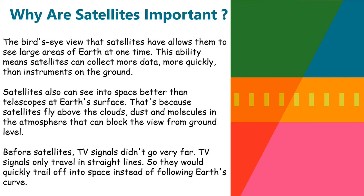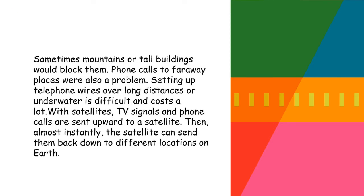Why are satellites important? The bird's eye view that satellites have allows them to see large areas of Earth at once. This means satellites can collect more data more quickly than instruments on the ground. Satellites can also see into space better than telescopes at Earth's surface, because satellites fly above the clouds, dust, and molecules in the atmosphere that can block the view from ground level. Before satellites, TV signals didn't travel very far — they only travelled in straight lines and would quickly trail off into space instead of following Earth's curve. Sometimes mountains or tall buildings would block them.